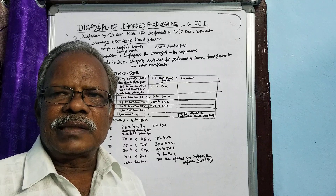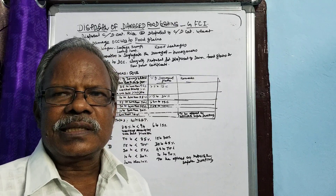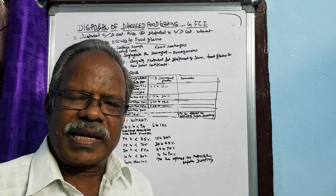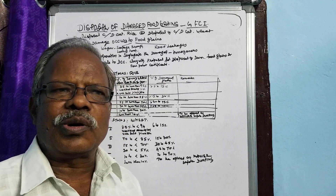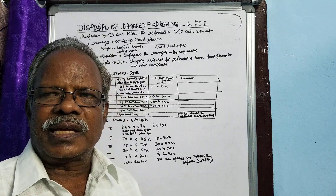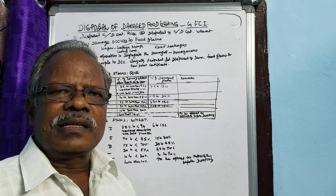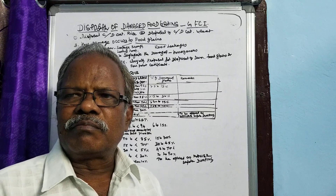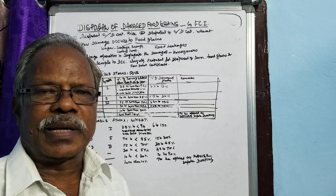Sometimes, during the transit of food grains through wagons, contamination may also occur. If the bottom of the wagon is not cleaned properly and contains coal — coal-coated wagons — and also iron ore or some other fertilizer residue, these may cause contamination, and that also has to be segregated properly, and a separate person is to be made responsible for that.